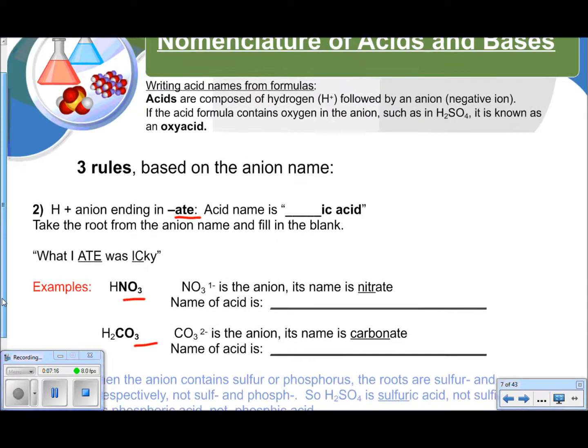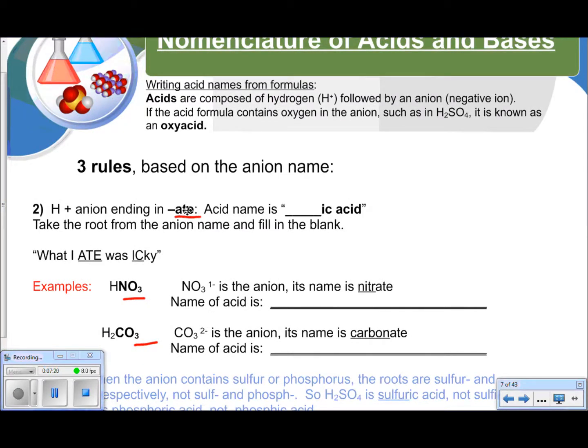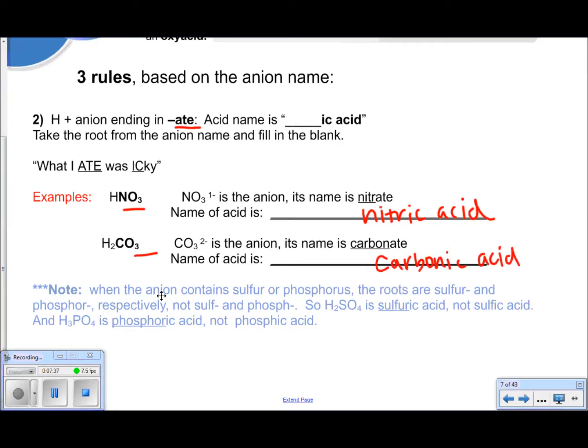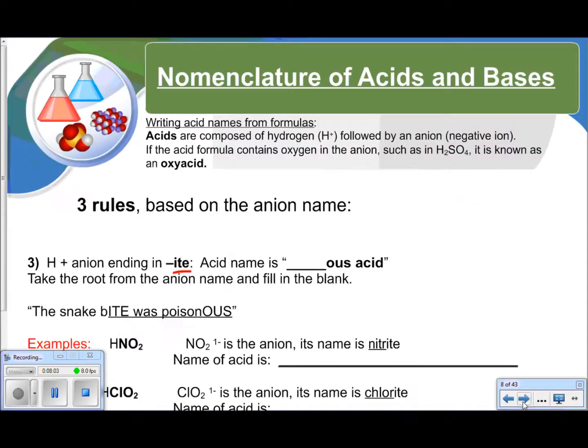Our second rule is if you have the hydrogen and then an anion ending in '-ate.' Remember what I ate was icky. So here we have nitrate, so we're going to name this acid nitric acid. And here we've got carbonate, so it is carbonic acid. In blue, I have written, note, when the anion contains sulfur or phosphorus, the roots are sulfur and phosphor respectively, not sulf and phosph. So H2SO4 is sulfuric acid, not sulfic acid. And H3PO4 is phosphoric acid, not phosphic acid. We see a lot of errors with this little note I have here. So make sure to remember this, write it down, maybe put a big star next to it.